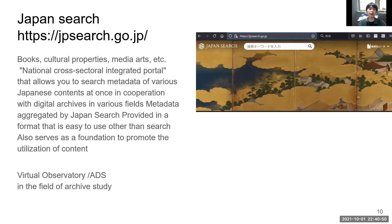In Japan, last year a metadata database of various Japanese contents across Japanese museum curation databases was opened. The name of the search system is JapanSearch. JapanSearch is a metadata database — we think of it as like a virtual observatory or ADS system in the field of archive studies in Japan. So we can easily search the database using JapanSearch.